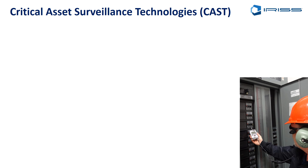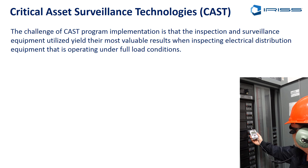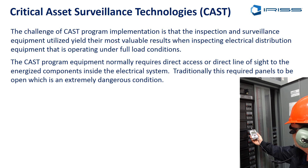There are a number of things we need to consider when utilizing a CAST program. First and foremost, we need the equipment under as much load as possible, because the equipment yields its most valuable results under load. An infrared camera won't show much with no load on the system — put some load on it, and the I²R high-resistance connection produces a lot of heat with current flowing through it, and we find problems much quicker. We also need direct access — an infrared camera can only measure what it can see.